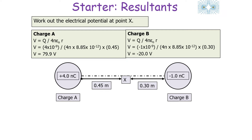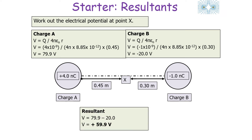Notice that for electrical potential we don't state a direction like 'left' or 'right' as we do for electrical field strength. Instead, the plus or minus sign comes from the equation itself — a positive charge gives a positive potential and a negative charge gives a negative potential. Summing the two values, 79.9 plus (−20), the resultant electrical potential at point X is +59.9 volts.